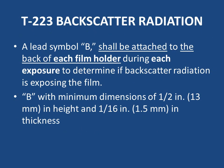T-223: Backscatter Radiation. A film should contain only radiation from the source through the object. Backscatter radiation occurs when radiation is reflected from nearby surfaces or objects and exposes the film. To detect this, a lead letter 'B' with minimum dimensions of half inch (13 mm) in height and 1/16 inch (1.5 mm) in thickness shall be attached to the back of each film holder during each exposure.